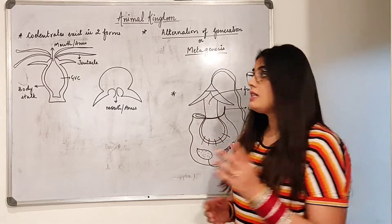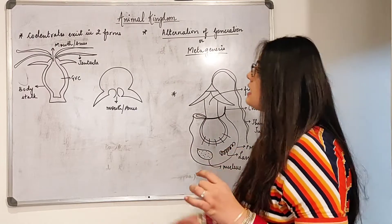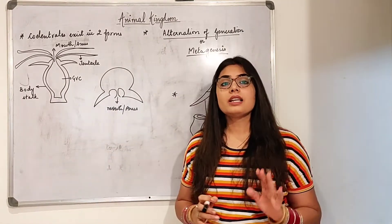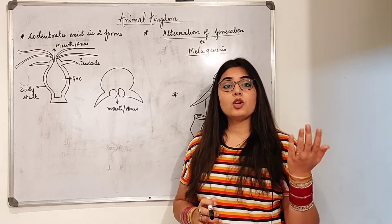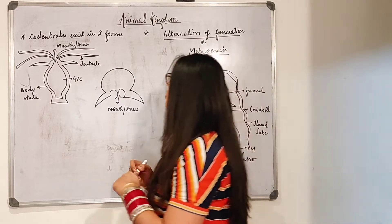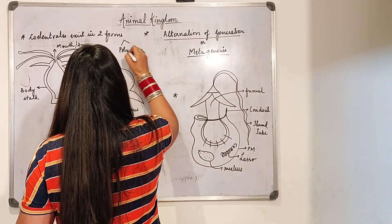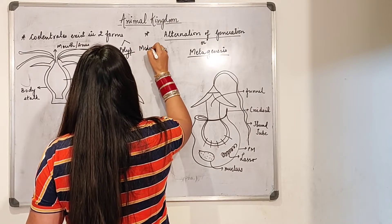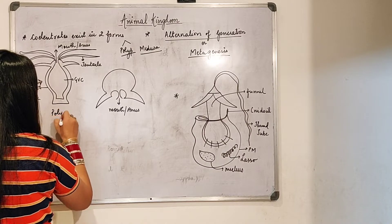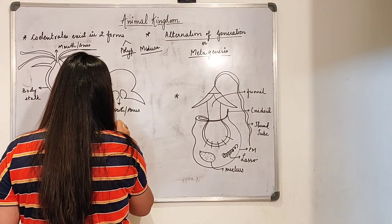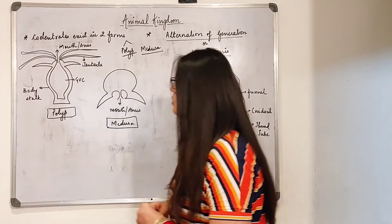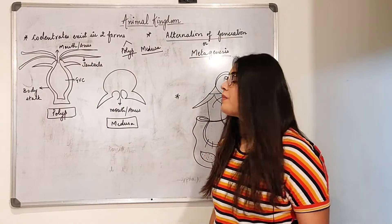Cnidaria exist in two forms — the polyp form and the medusa form. Looking at the diagrams, this first diagram represents the polyp form and this second diagram represents the medusa. You can see their shapes are entirely very different from each other.